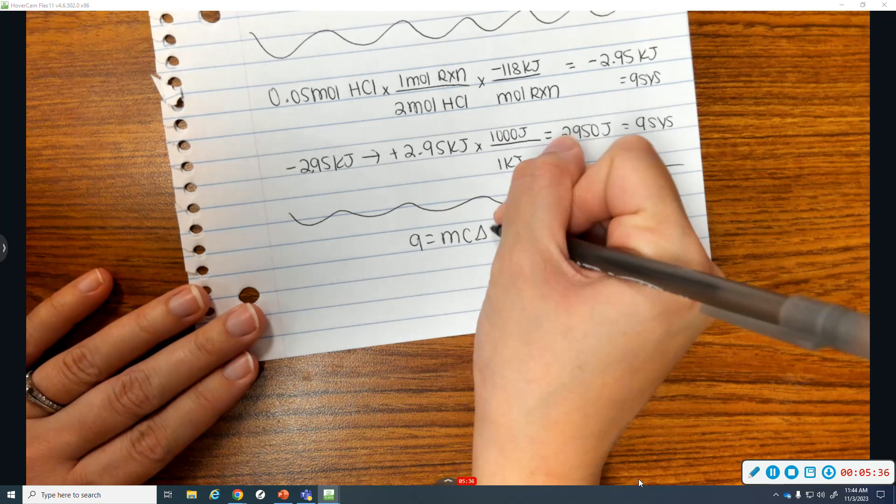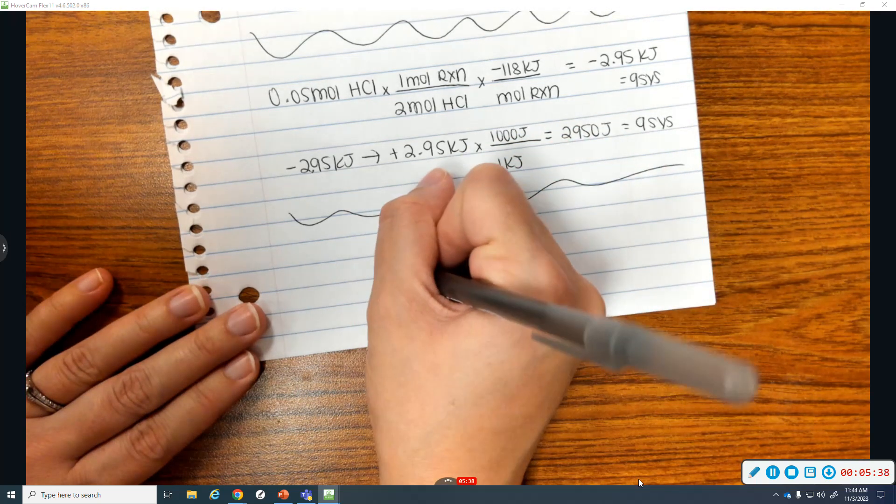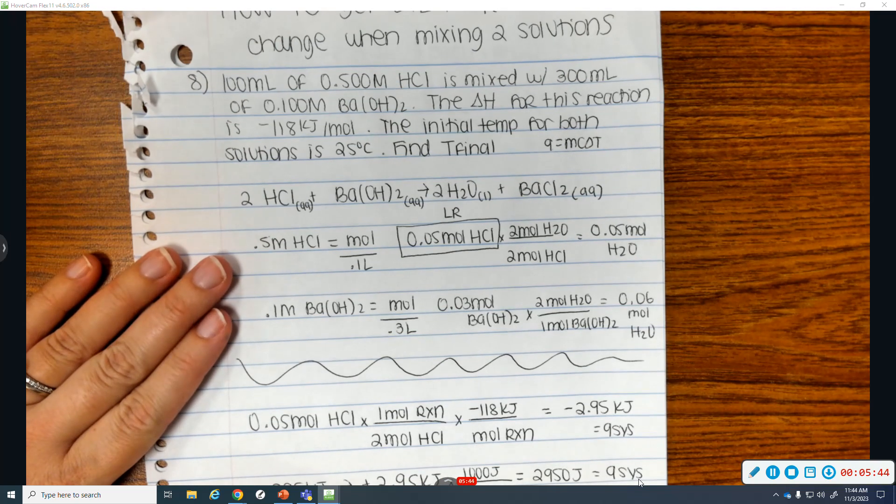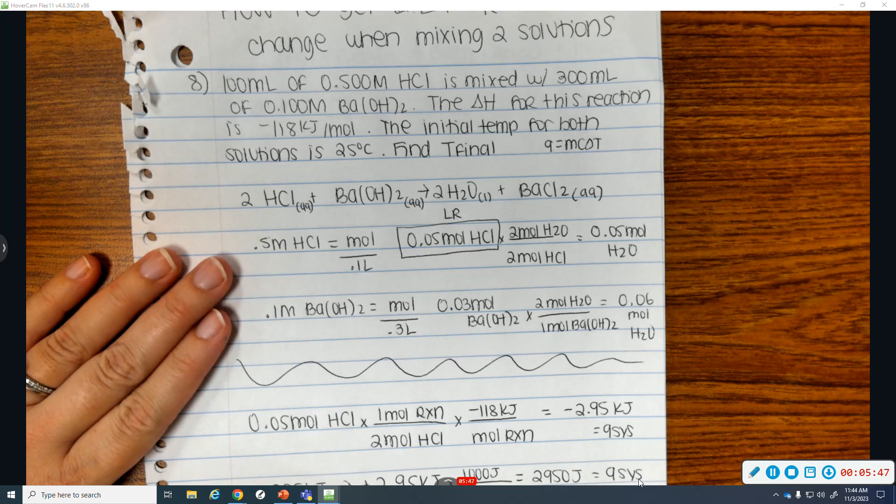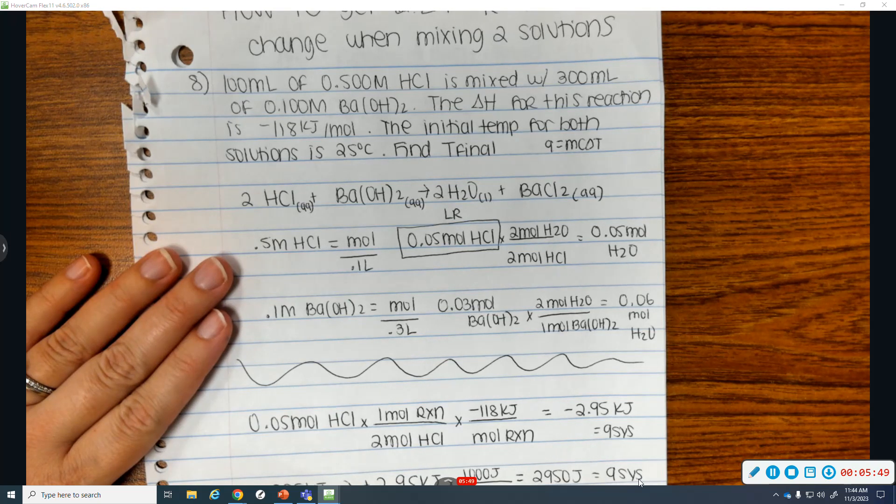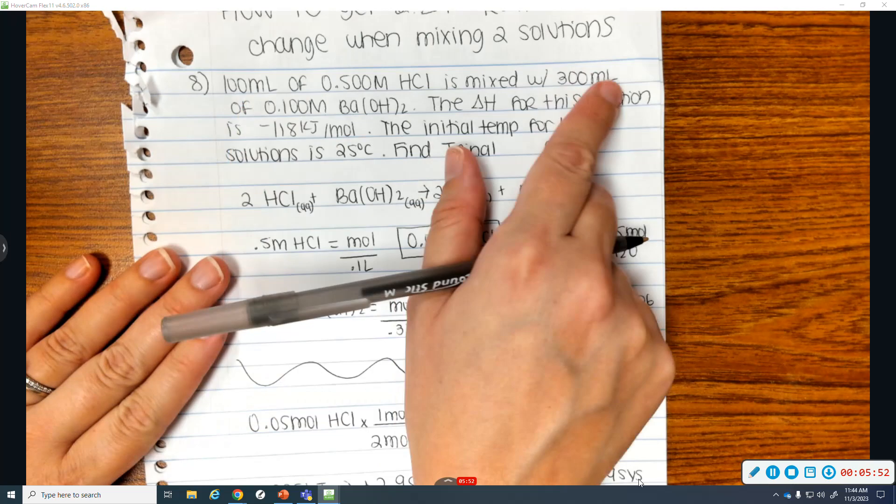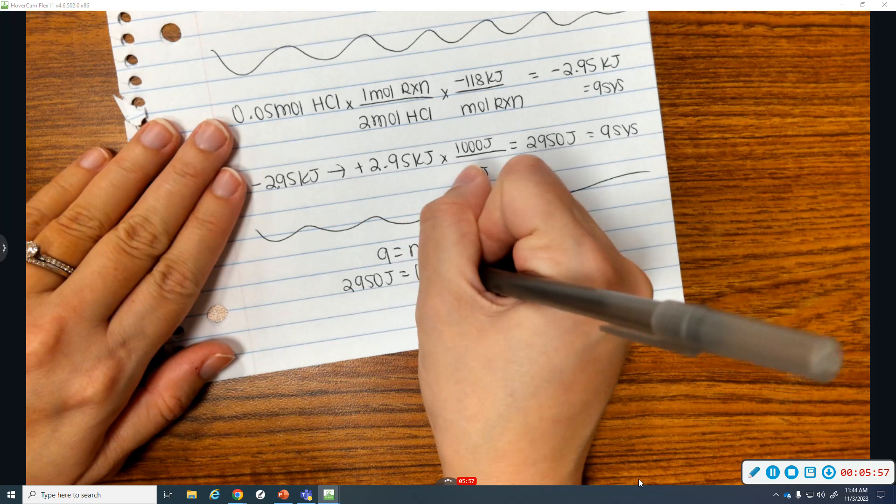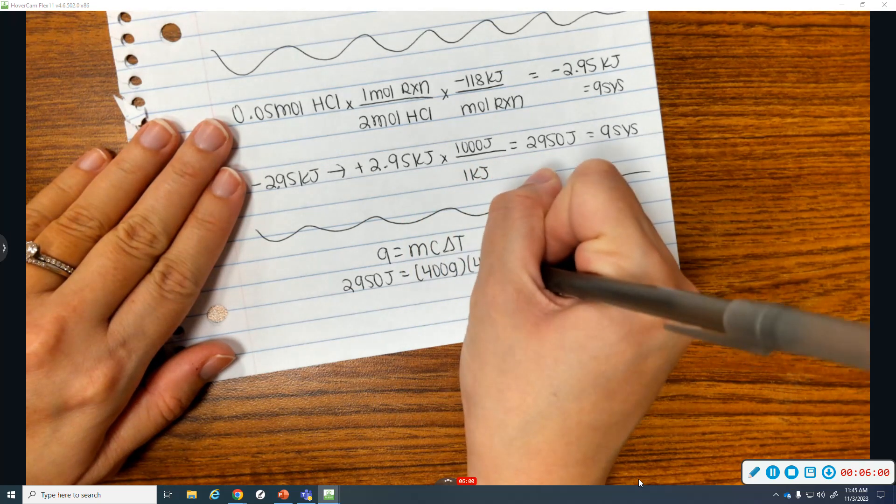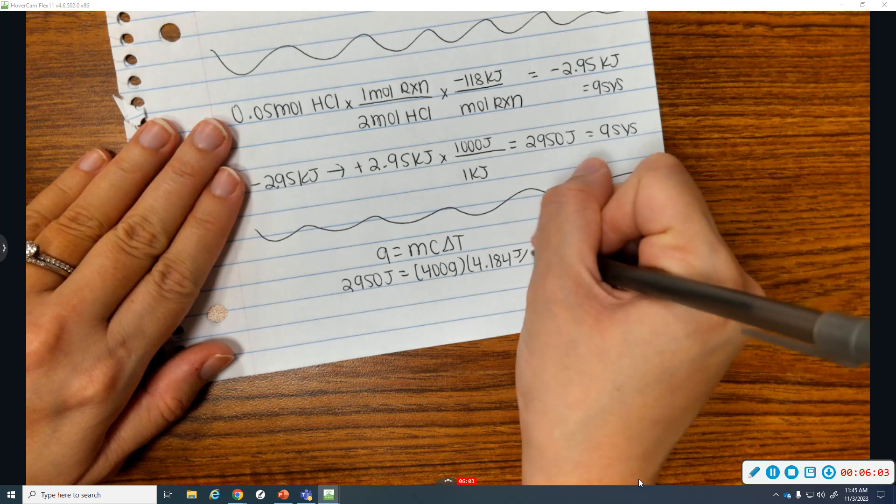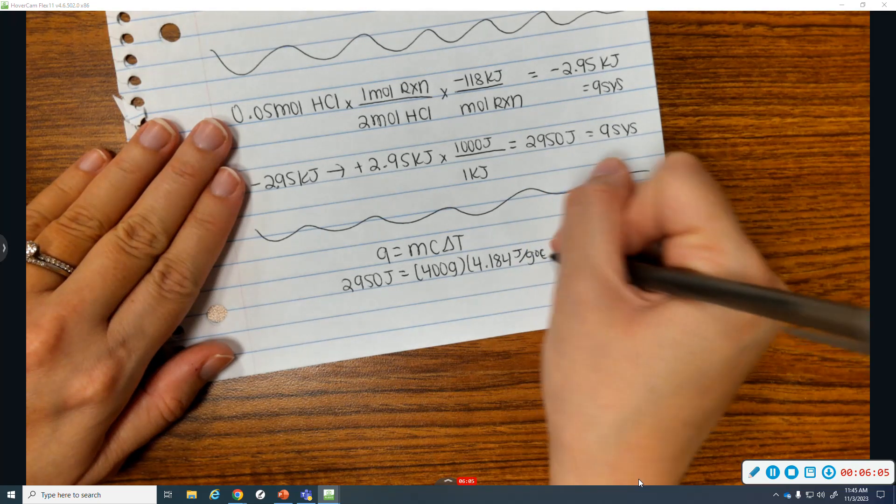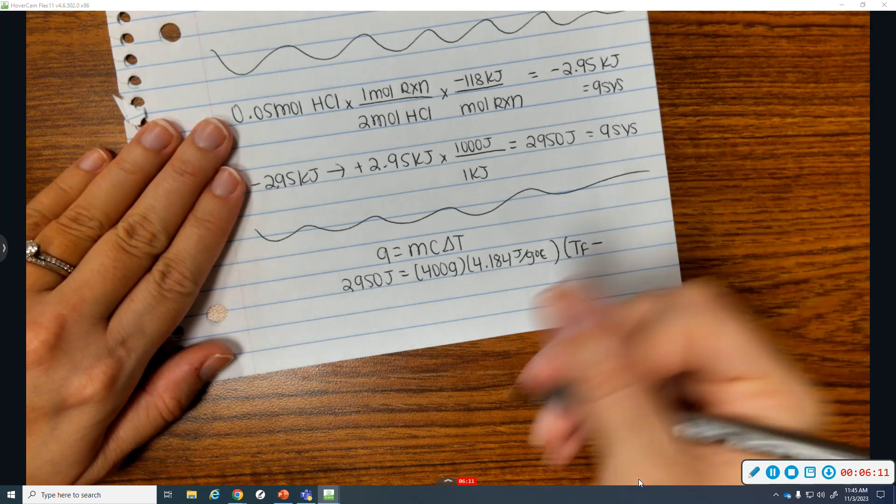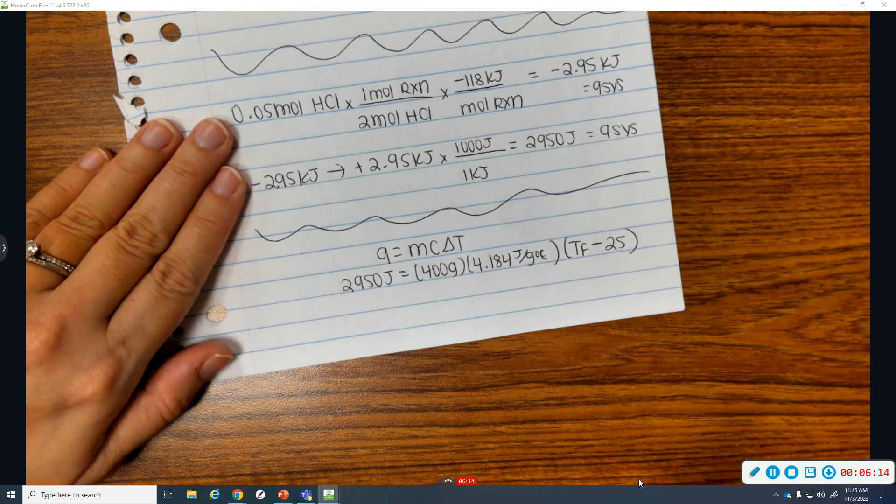So, Q equals mc delta T. 2,950 joules equals for mass. Because these solutions are essentially all water. We assume the density of water. Which is 1 gram per milliliter. So, 100 milliliters is 100 grams. 300 milliliters, 300 grams. You combine them. That is 400 grams. We use the specific heat of water. 4.184 joules per gram times degrees Celsius. And delta T is T final minus initial. Initial is 25 degrees Celsius.